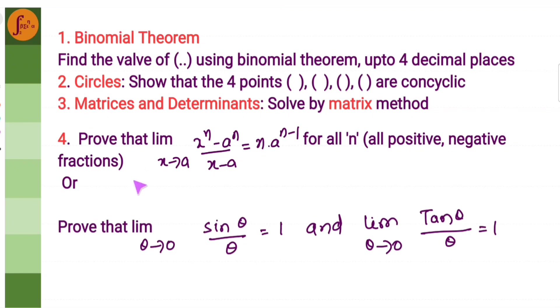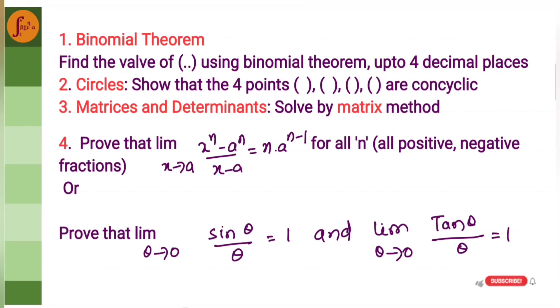Then, from limits and continuity chapter, we will have to prove the limits theorem or this trigonometric theorem, which is limit theta tending to 0, sin theta by theta is equal to 1 and limit theta tending to 0, tan theta by theta is equal to 1. So, we will have to study these two theorems.